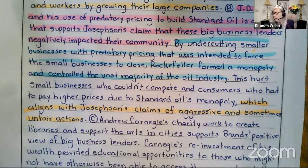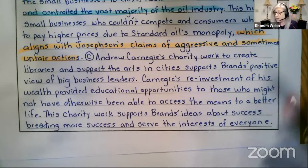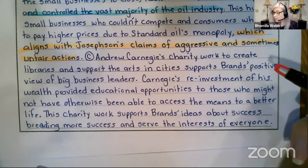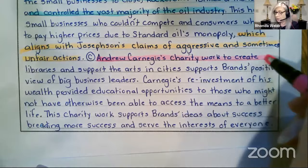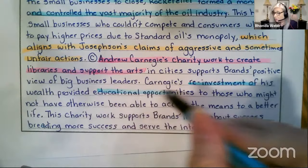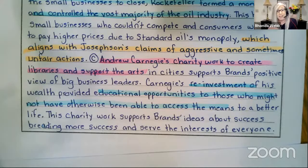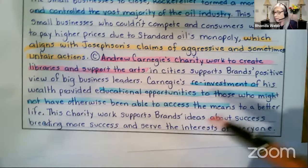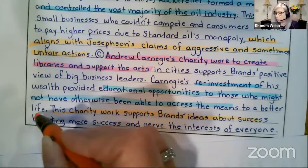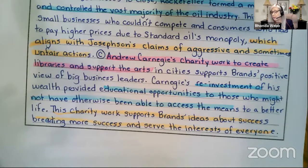For part C supporting Brands, I use Andrew Carnegie's charity work creating libraries and supporting the arts. Carnegie's reinvestment of his wealth provided educational opportunities to those who might not otherwise have accessed them — this supports Brands' ideas about success breeding more success and serving the interests of everyone. The key is always tying your example back to what the author is actually saying — that's what many students miss.